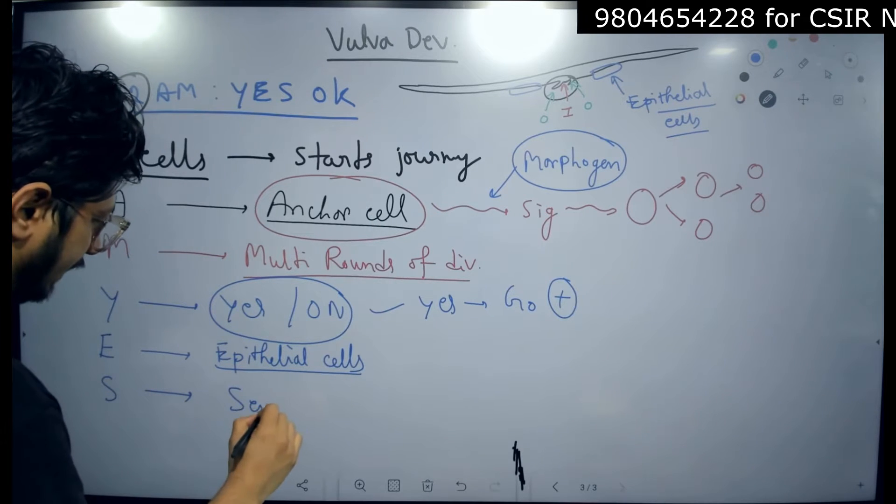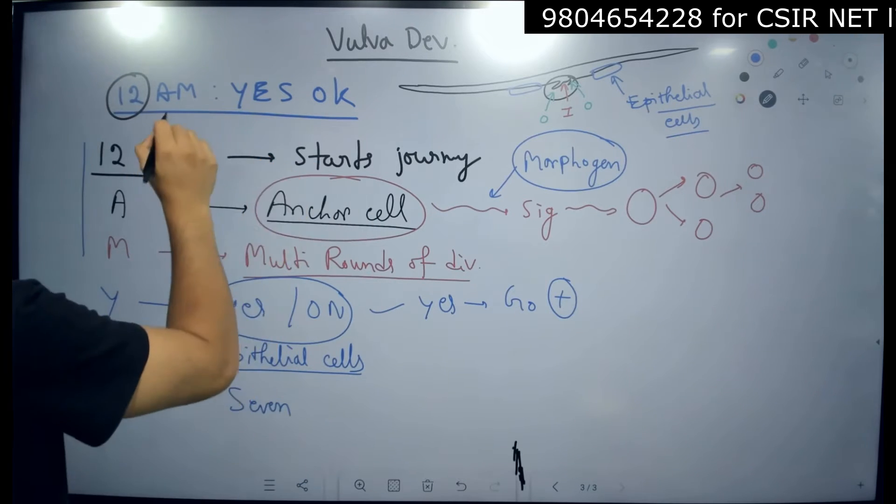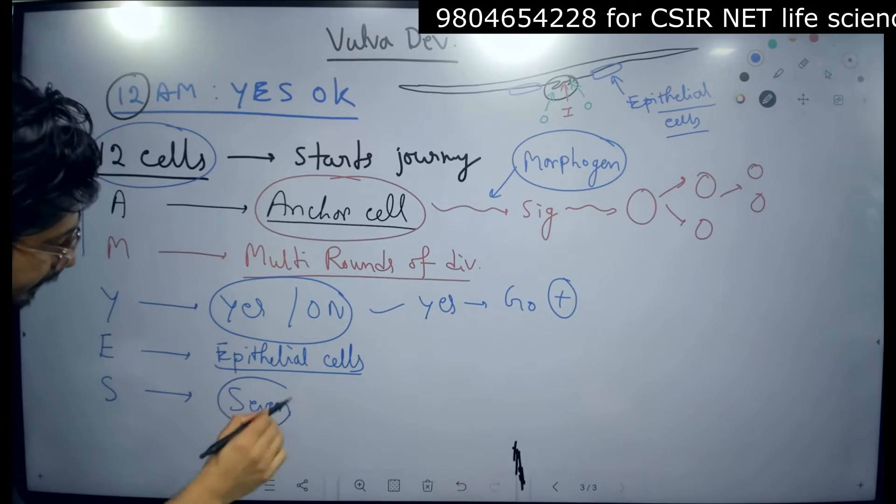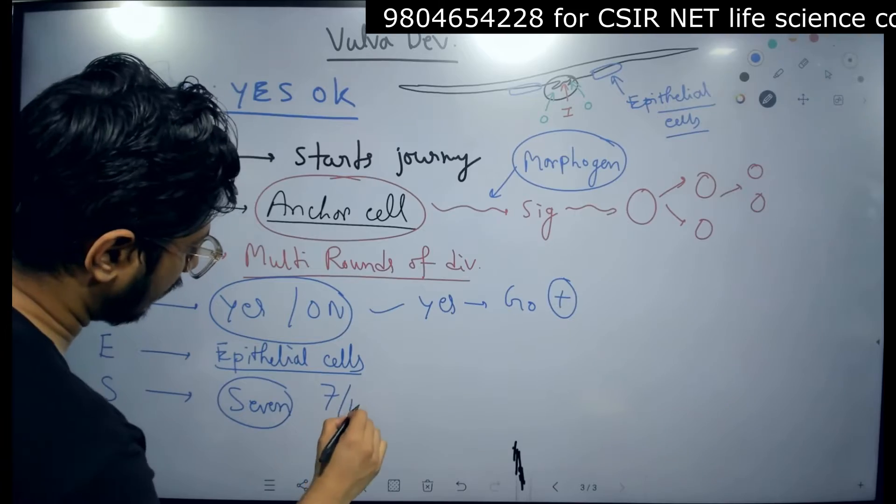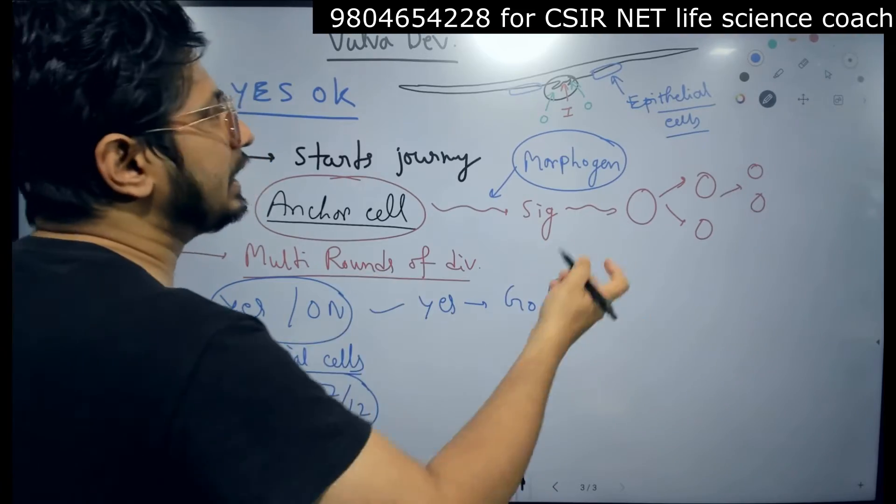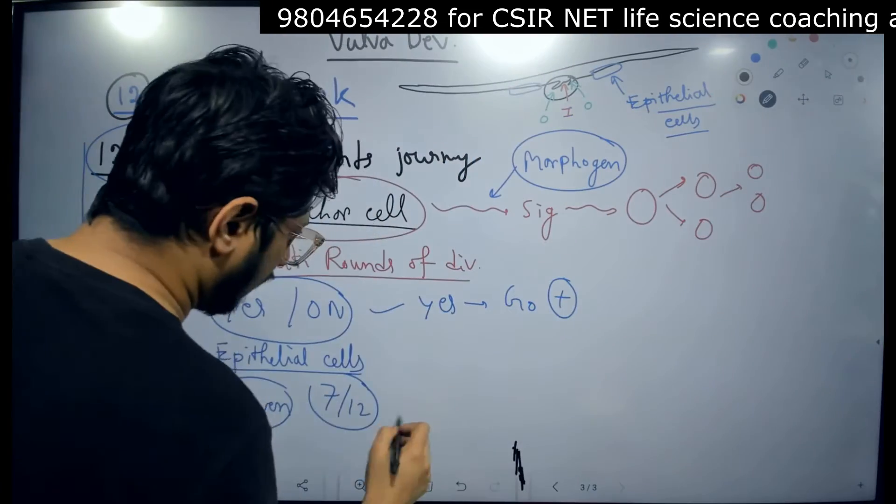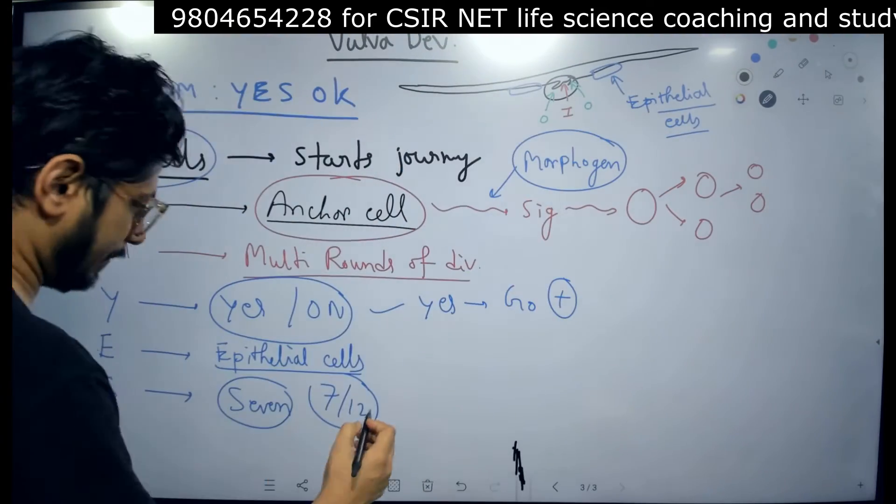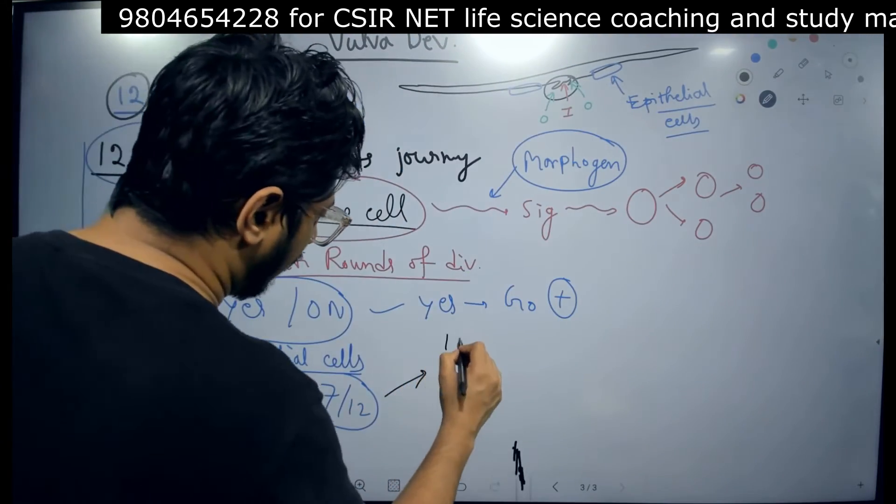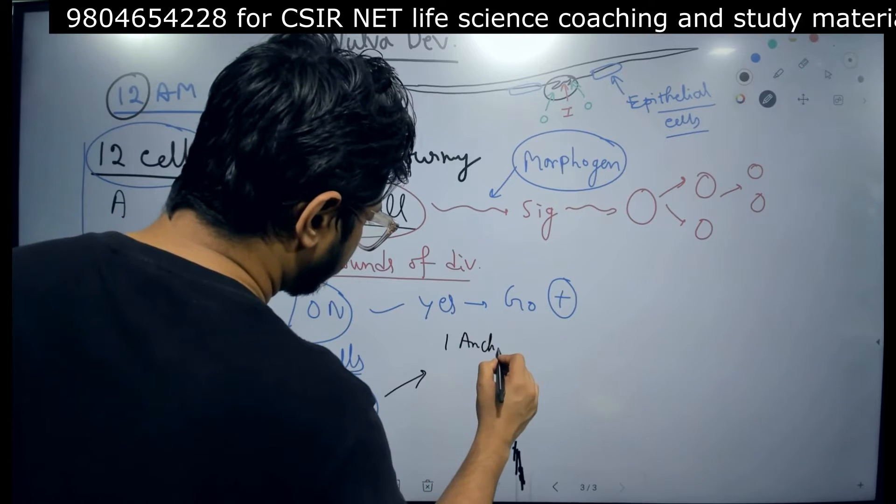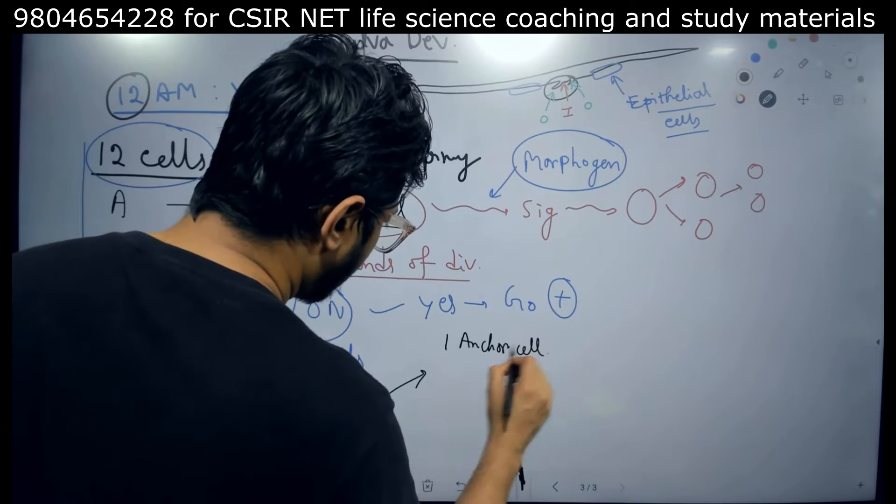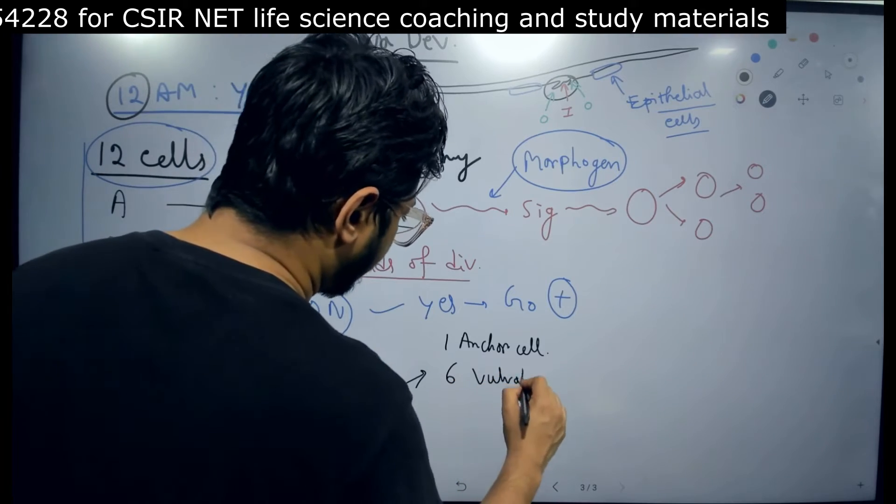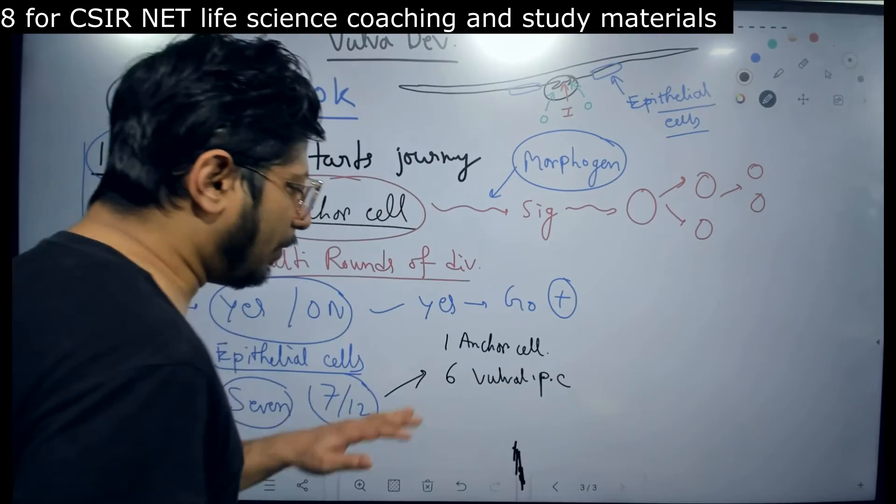S for 7. Out of this 12, remember, 12 cells starts the journey. Out of that, the 7 cells, the 7 out of 12 actually directly involve in the formation of the vulva. Let me move to the next part to it because among the 7 cells, we have one anchor cell and 6 vulva precursor cells.